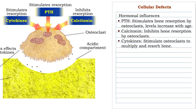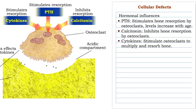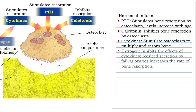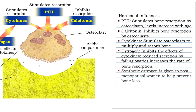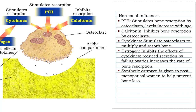Cytokines, regulatory chemicals secreted by macrophages in the bone marrow, facilitate resorption and promote the formation of new osteoclasts. Estrogen inhibits the bone-removing effects of cytokines, but the ovaries stop producing estrogen at menopause. Estrogen replacement therapy is commonly prescribed to postmenopausal women to help prevent bone loss.